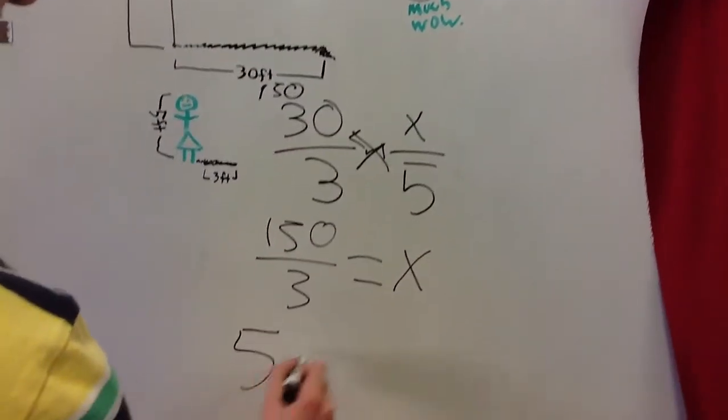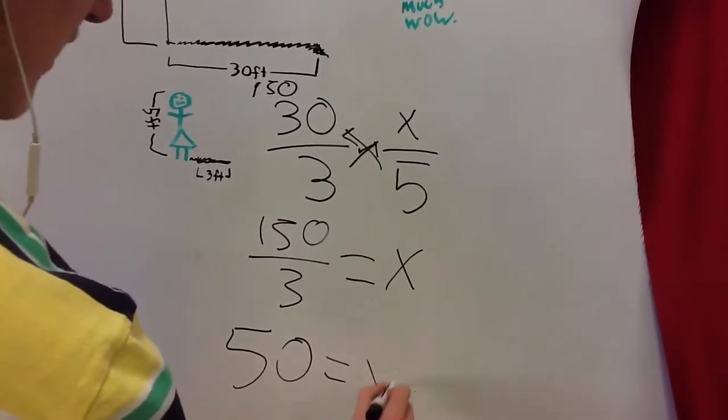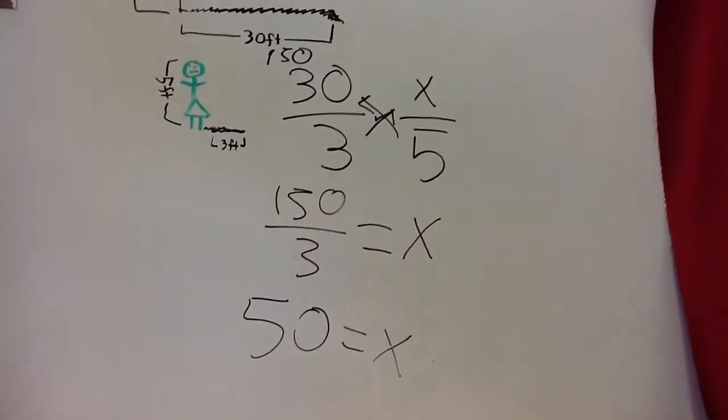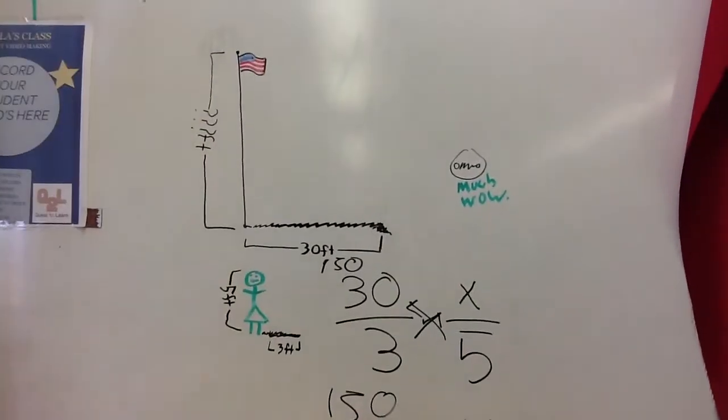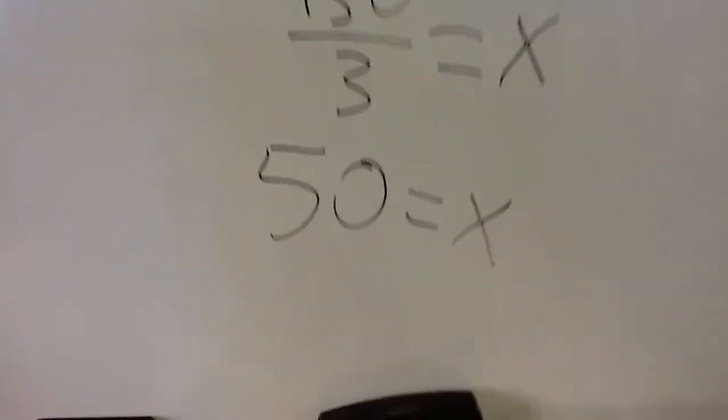If we do that, we get 50 equals x. And now we know that the flagpole is 50 feet tall. The end.